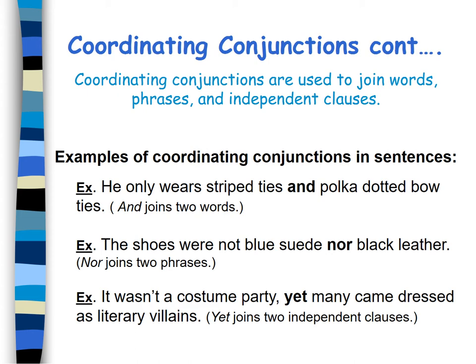Have a look at these examples. He only wears striped ties and polka-dotted bow ties. AND joins two words: ties and bow ties. The shoes were not a blue suit nor black leather. NOR joins two phrases. Example 3: It wasn't a costume party, yet many came dressed as literary villains. YET joins two independent clauses.